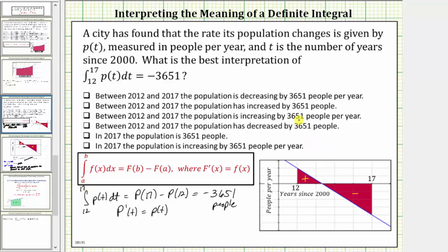Now looking at the sentences given above, the correct sentence is between 2012 and 2017, the population has decreased by 3,651 people. I do also want to take a look at this first sentence though. Notice how this one reads, between 2012 and 2017, the population is decreasing by 3,651 people per year. The reason this sentence is not correct is because the result is not a rate of 3,651 people per year, it's a total change in the population over the time period from 2012 through 2017.